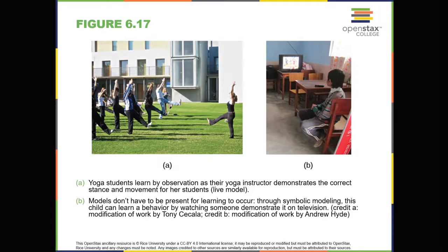Like Tolman, whose experiments with rats suggested a cognitive component to learning, psychologist Albert Bandura's ideas about learning were different from those of strict behaviorists. Bandura and other researchers proposed a brand of behaviorism called social learning theory, which took cognitive processes into account. According to Bandura, pure behaviorism could not explain why learning can take place in the absence of external reinforcement. He felt that internal mental states must also have a role in learning, and that observational learning involves much more than imitation.